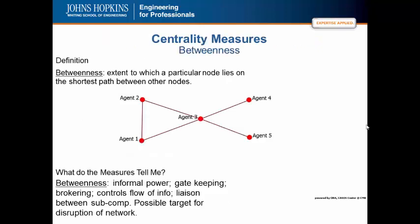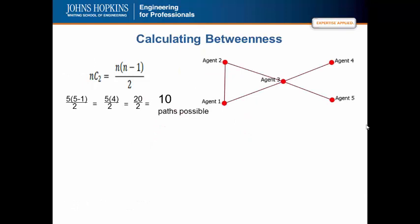We are focusing now on betweenness centrality. Again, the extent to which particular node lies on the shortest path between others. It is used to measure informal power and gate keeping within networks. The first thing we have to understand with calculating betweenness is the number of potential paths that exist in the network.